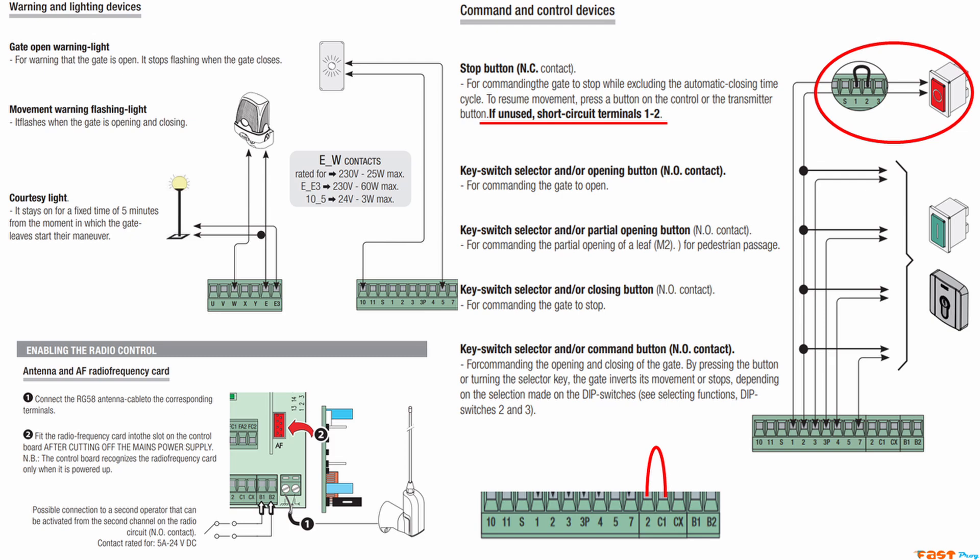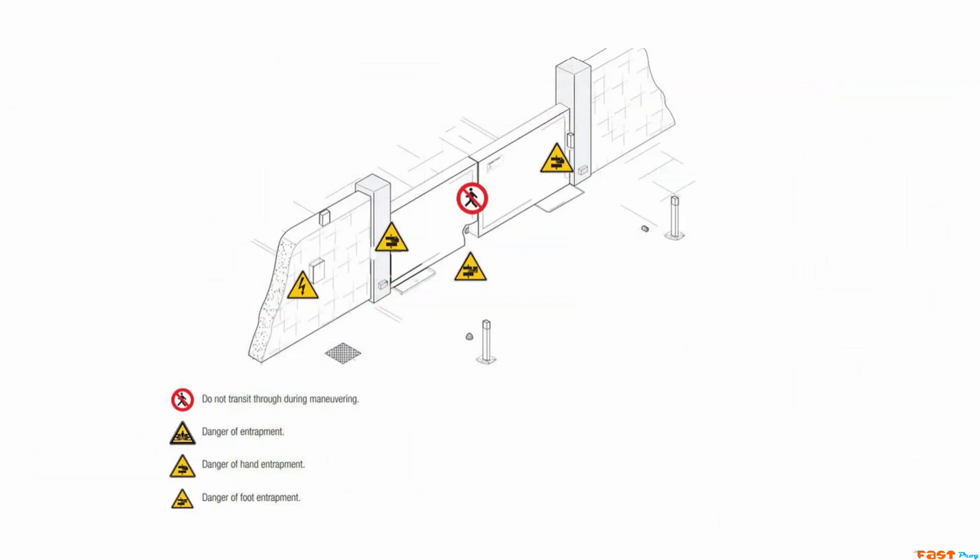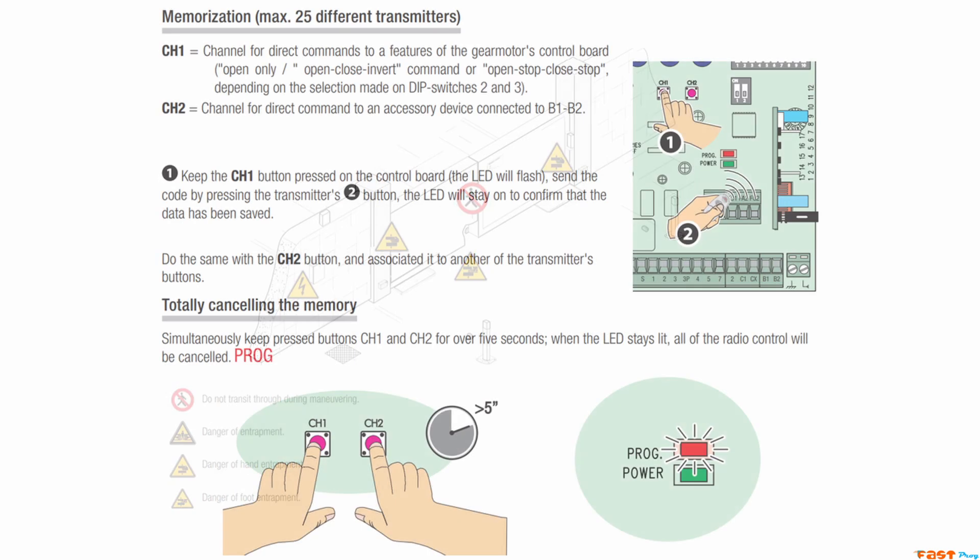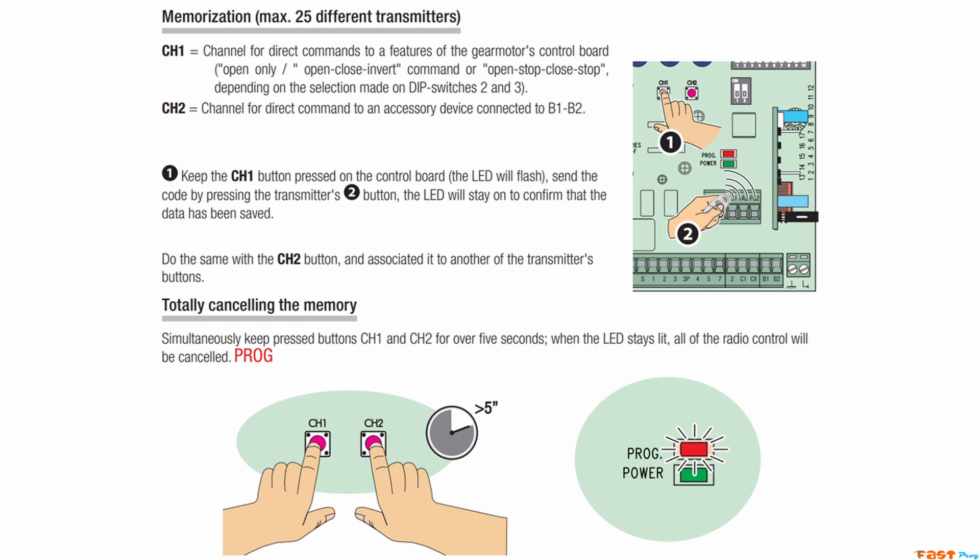For now, we're going to test the motors. Make sure the maneuvering area is clear of any obstacles. Grab your remotes. Press and hold the CH1 button. The signal light will blink. While holding it, press the button on the remote you want to program. The light will stay on, indicating the remote is memorized.